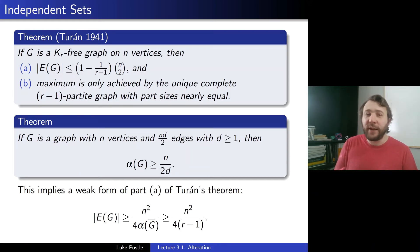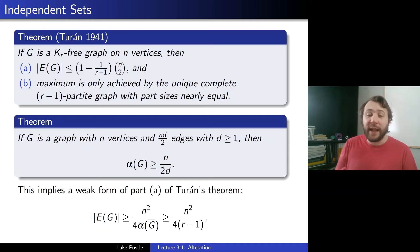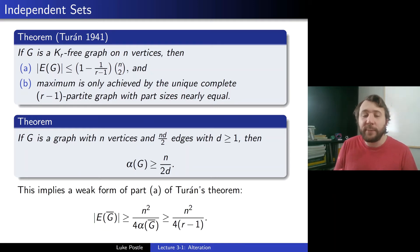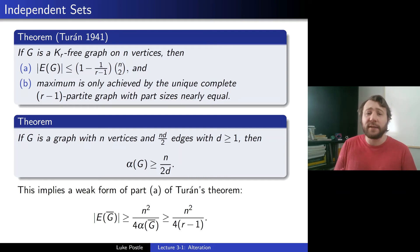How does this imply a weak Turán? You look at the complement. If G is K_R-free, its complement has independence number at most R minus 1. Plugging into the above theorem, the number of edges in the complement would have to be at least N squared over 4 times the independence number, which is at least N squared over 4(R minus 1). So G has at most (1 minus 1 over 2(R minus 1)) times N-choose-2 edges — a weak Turán bound. With the better N/(D+1) result, we could recover the full theorem.